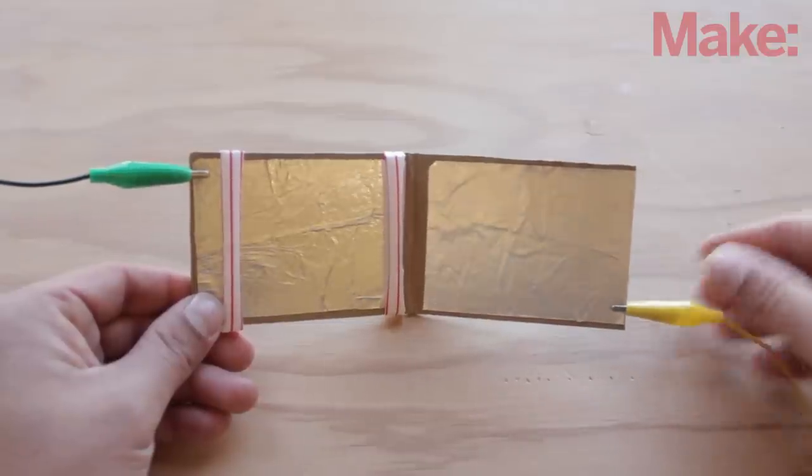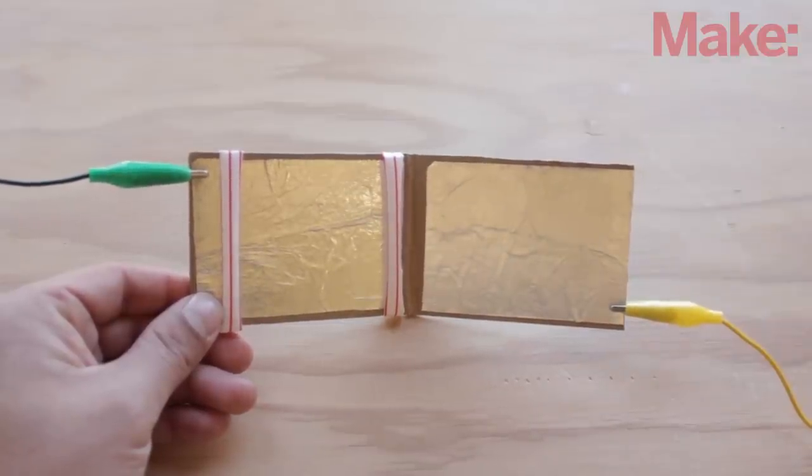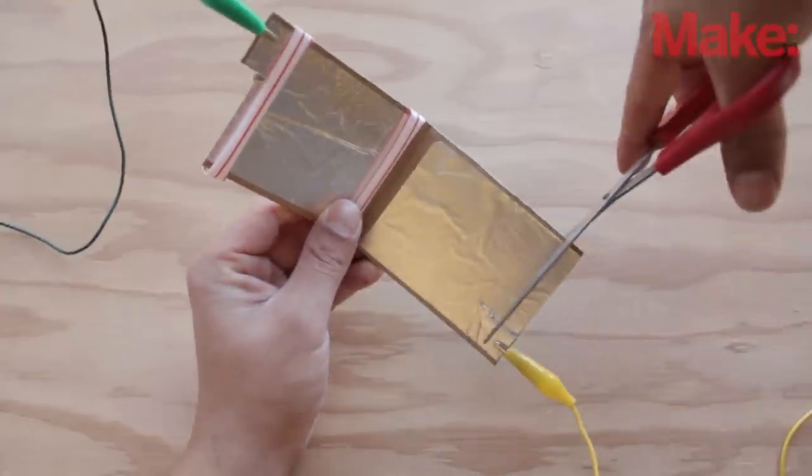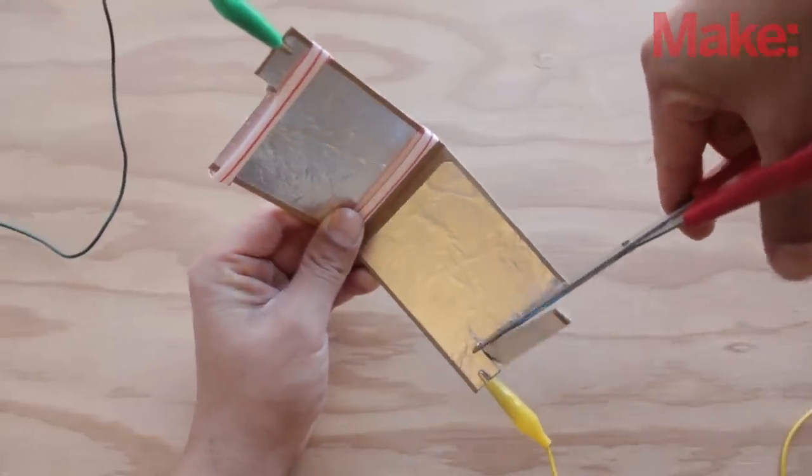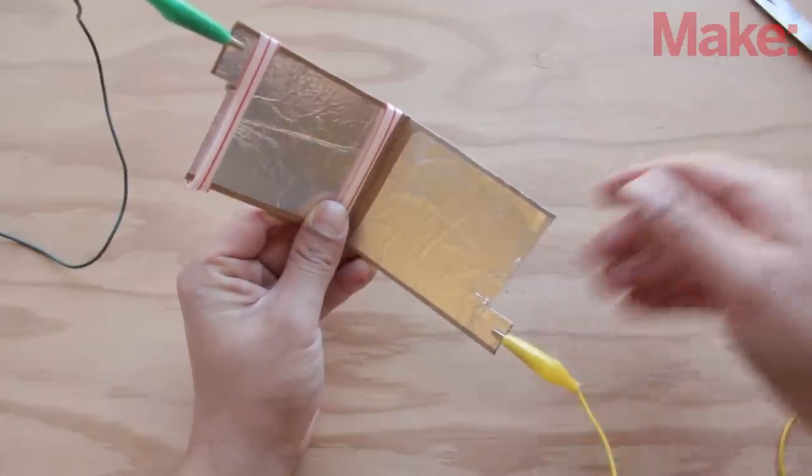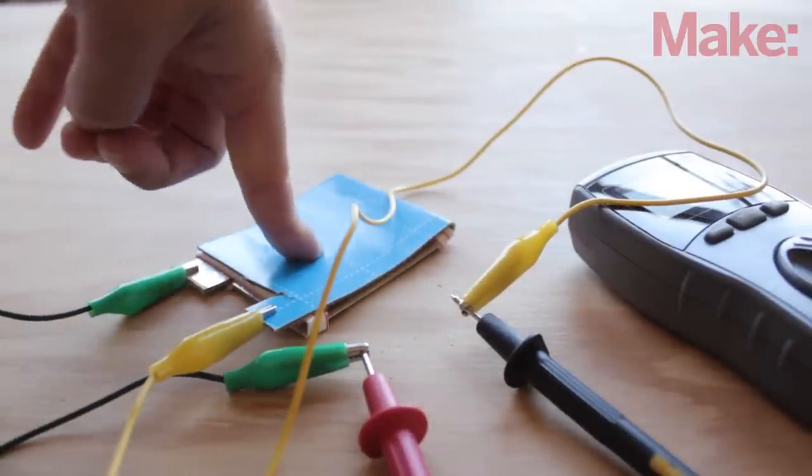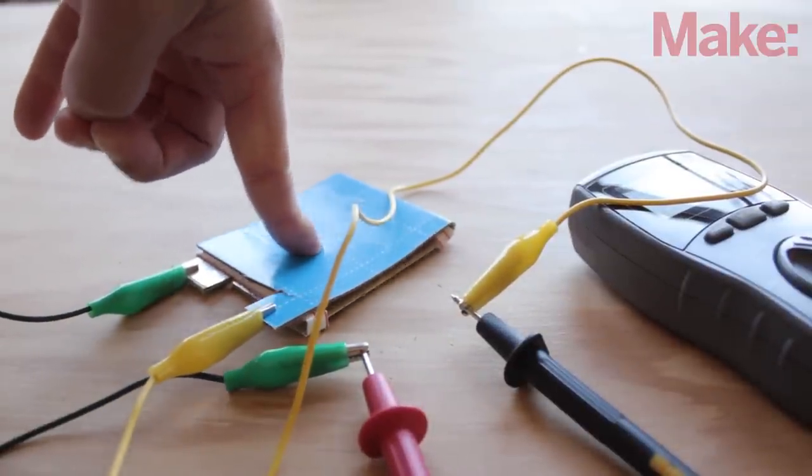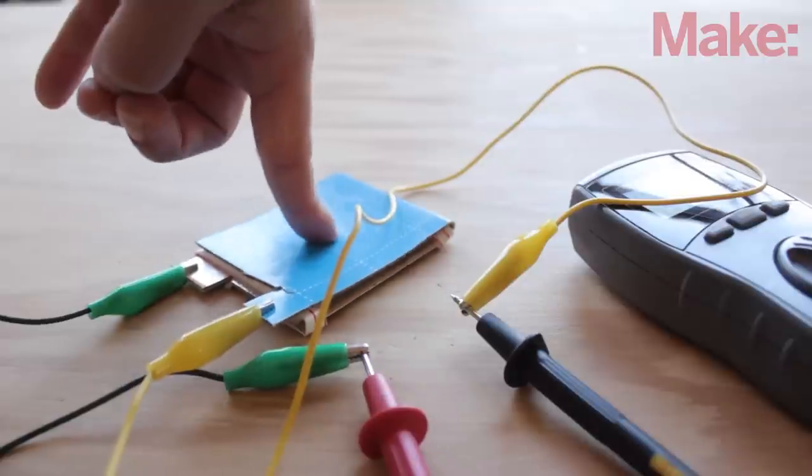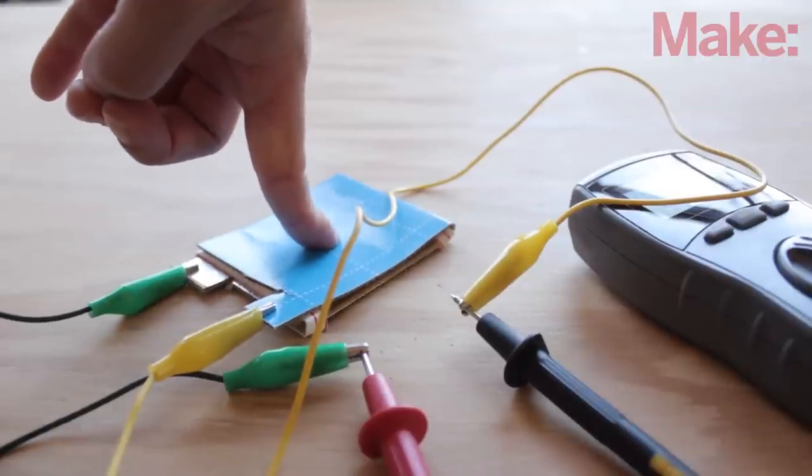Now, attach alligator clips to two opposing corners, and cut out the adjacent corners so that the clips will not short across the gap when the sensor is folded over. Close the sensor, and check its operation with the continuity tester on your multimeter. The straws hold the foil surfaces apart, but when something presses down on the middle, they make contact and close the circuit.